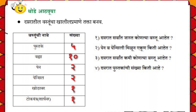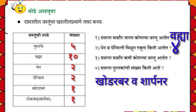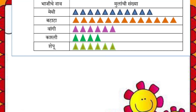Question 1: Which item is most in the school bag? Answer: Notebooks are the most. Question 2: How many pens and pencils are there in total? Pen 2 and Pencil 2, so total 4 items. Question 3: Which item is least in the school bag? Answer: Eraser and Sharpener — only 1 each.